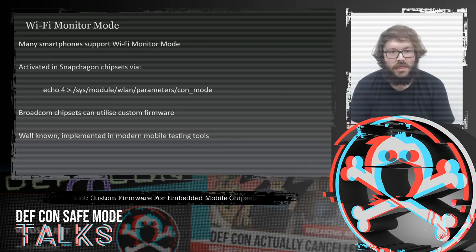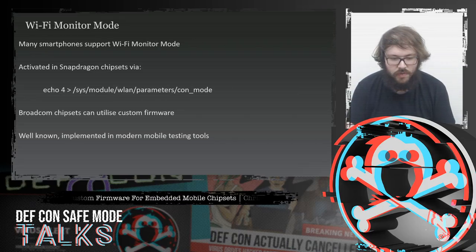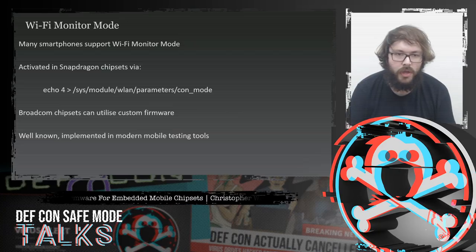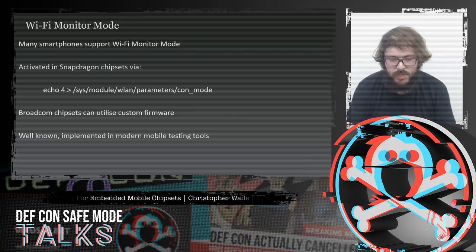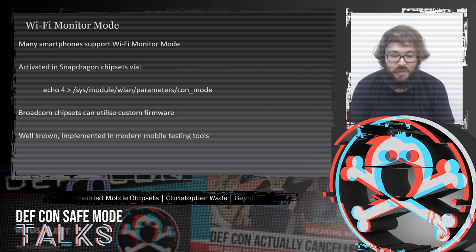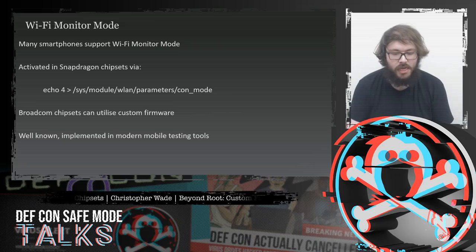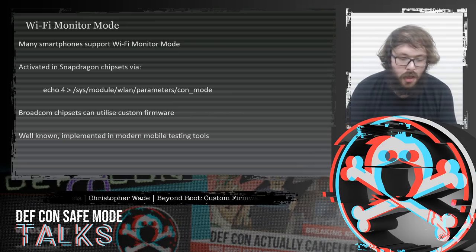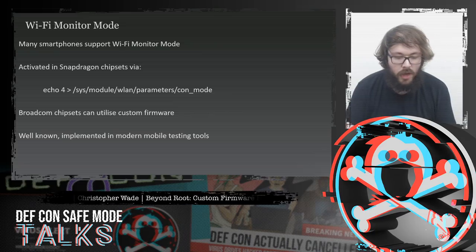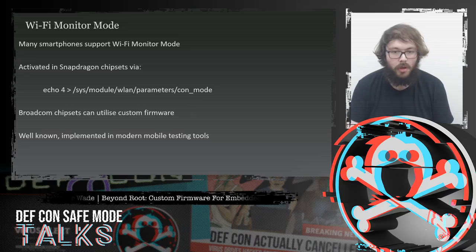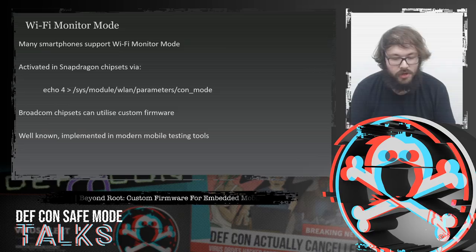There are a few well-known ways to do this without too much phone modification, such as Wi-Fi monitor mode, which can be activated in Snapdragon chipsets by echoing 4 into a specific kernel parameter in the file system, converting it into a monitor mode chipset. Also, if you add custom firmware to a Broadcom chipset and modify your kernel slightly, you can get monitor mode that way on Broadcom.